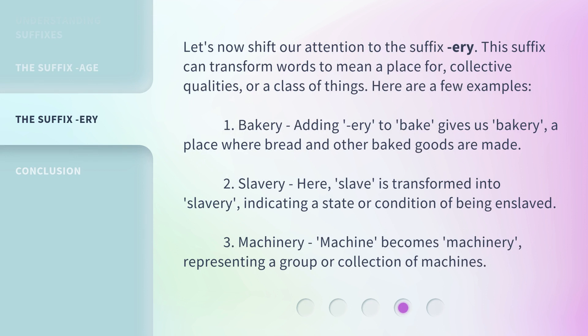Let's now shift our attention to the suffix '-ary'. This suffix can transform words to mean a place for, collective qualities, or a class of things. Here are a few examples. First, 'bakery': adding '-ary' to 'bake' gives us 'bakery', a place where bread and other baked goods are made.